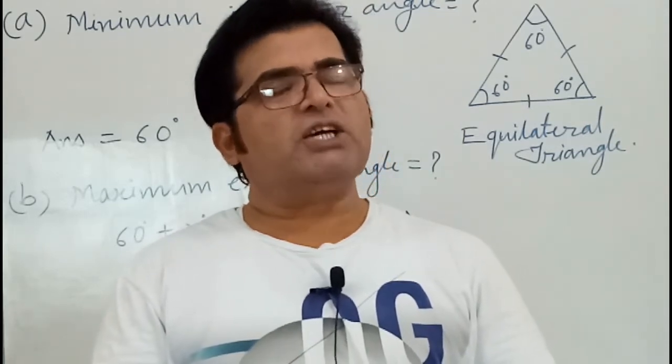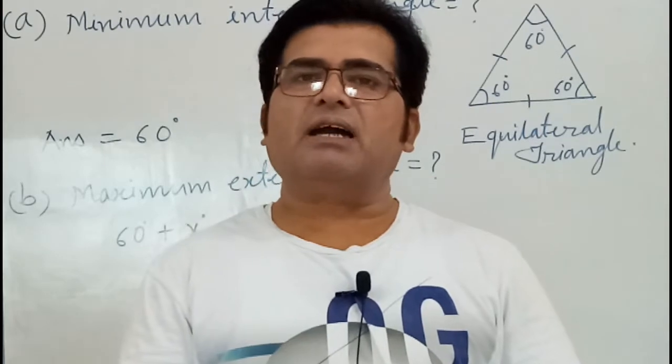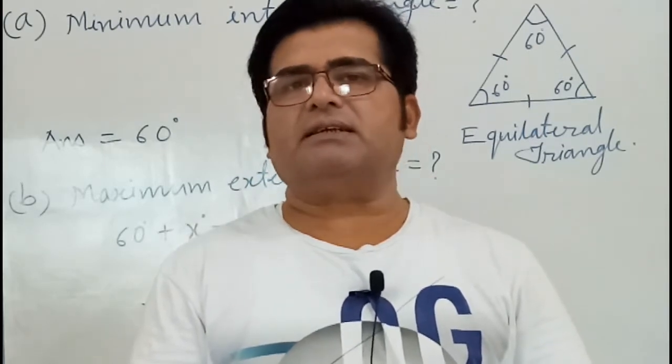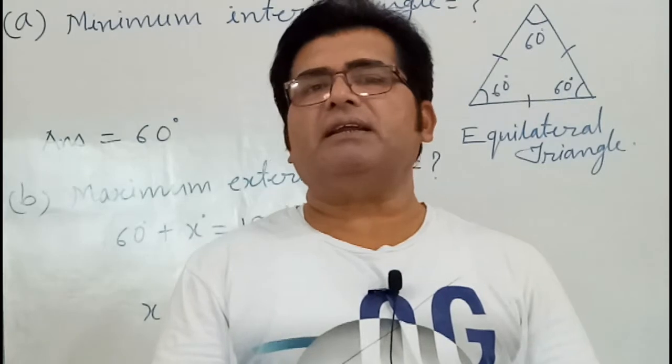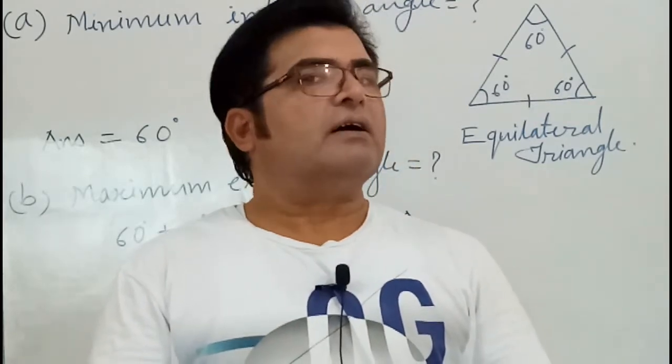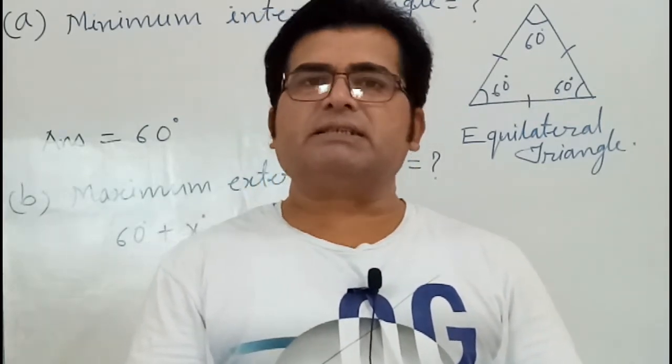In an equilateral triangle, the measure of each interior angle is 60 degrees. So, we say that the minimum interior angle of a regular polygon is 60 degrees.